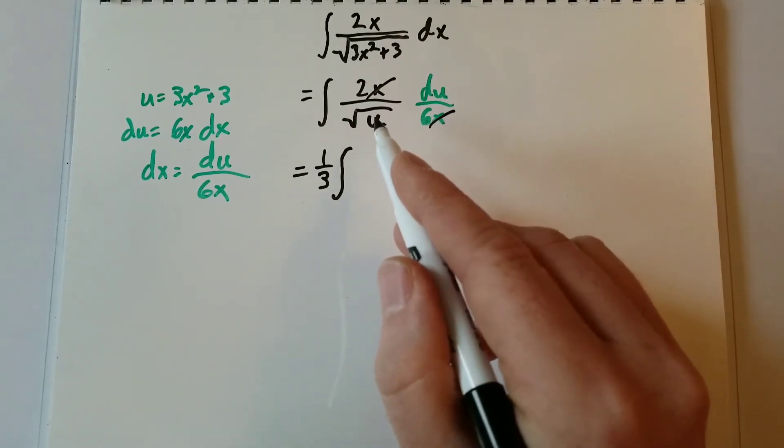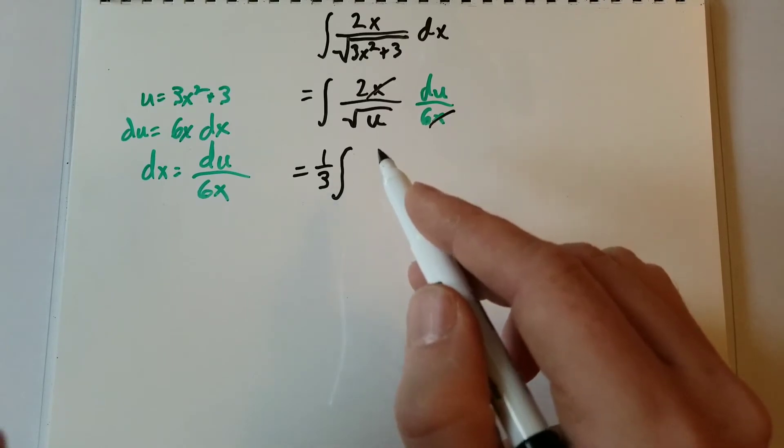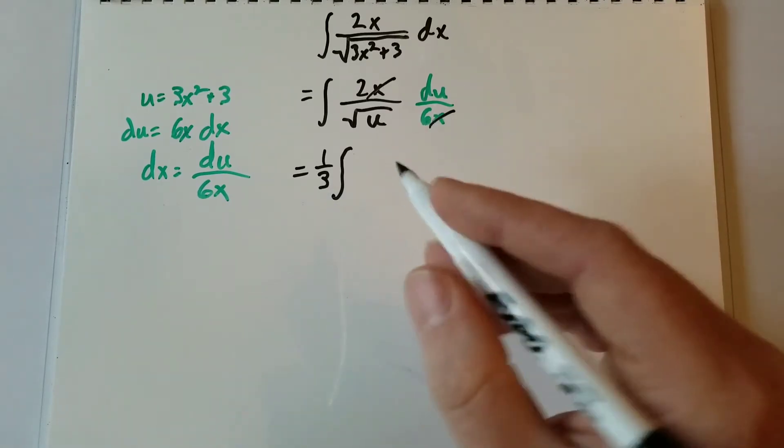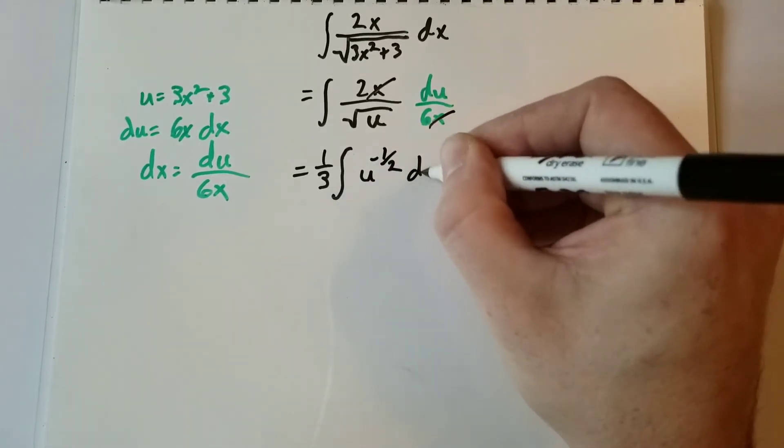And at the same time, change it from the square root to u to the negative 1 half. So it's going to be u to the negative 1 half du.